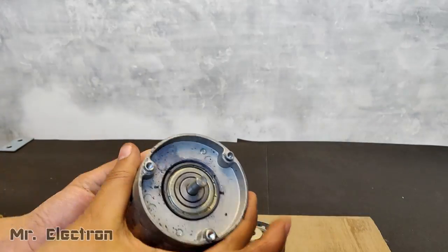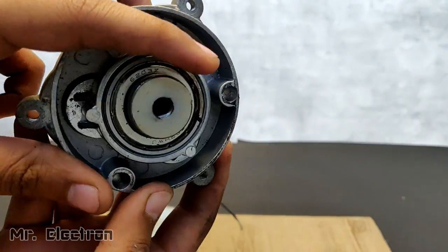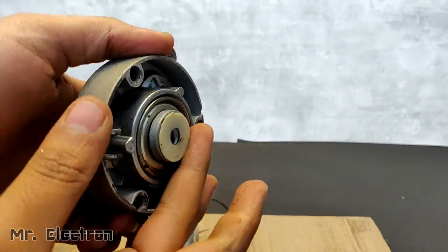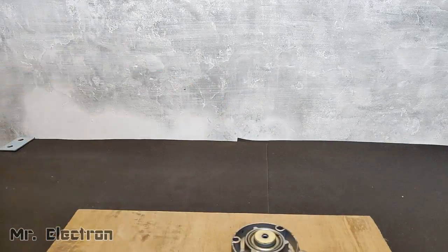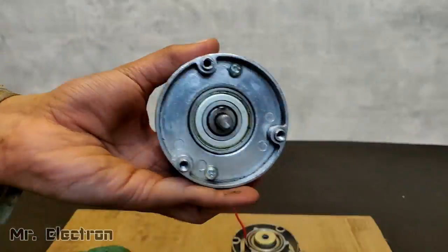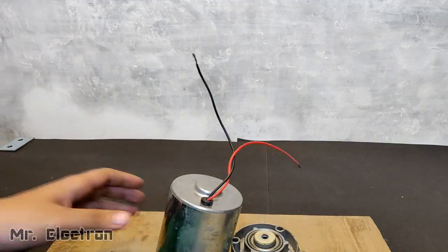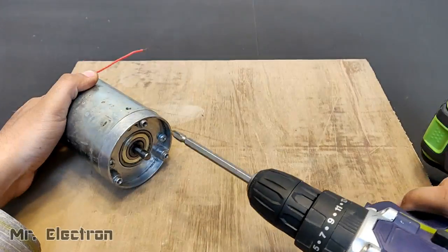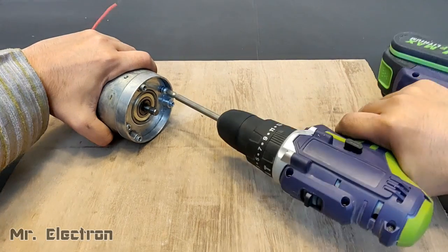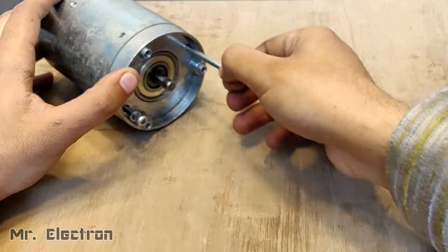You see, this is the shaft, that's the motor, and this is the bearing with some wobbly mechanism. Let's clean it up. Yeah, now it looks much better and shiny. It's running smooth, the motor, and it has black and red wire. Let's open up the motor to see what kind of motor is it, DC or AC.